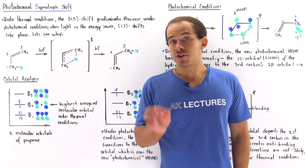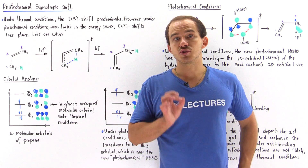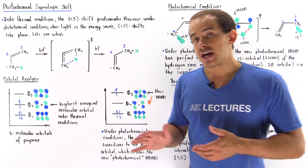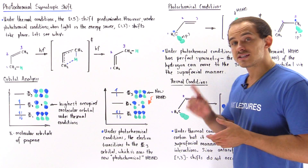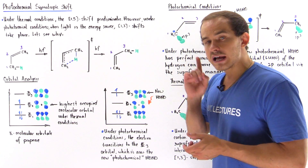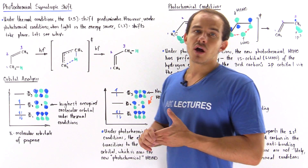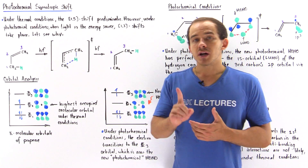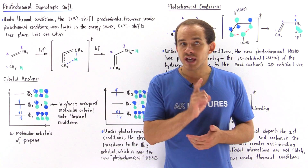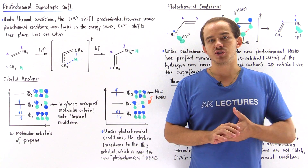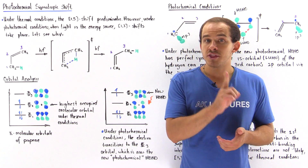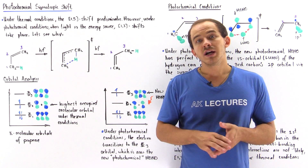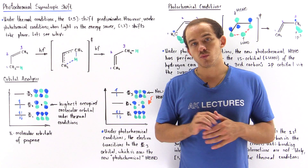In our discussion on thermal sigmatropic shifts, we said that under thermal conditions it's the 1,5 sigmatropic shift that will take place. But under photochemical conditions it's the 1,3 sigmatropic shift that will occur, and let's see why.